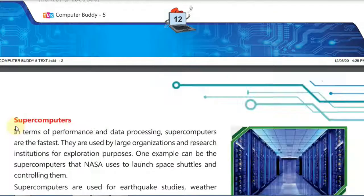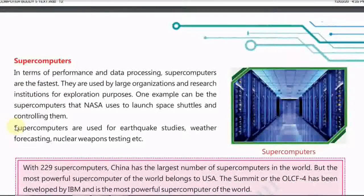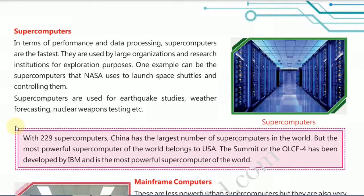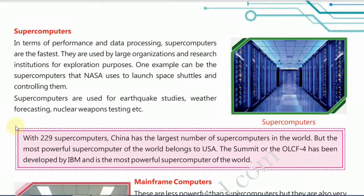The first type of computer is the supercomputer. In size, these computers are large and more efficient at solving complex calculations which would not be possible for any personal computer to solve in a short span of time. A personal computer might take 20 days to one month to solve a particular complex calculation, which a supercomputer can solve in a few seconds.